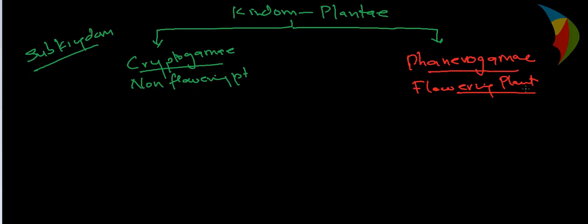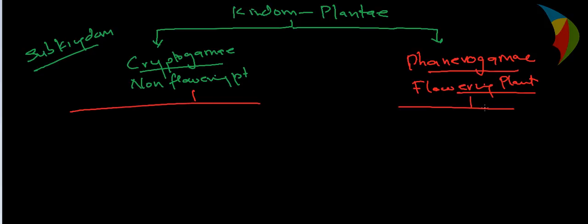So we have divided the kingdom Plantae into two sub-kingdoms: Cryptogamy and Phanerogamy — one is non-flower-bearing and one is flowering plants. Now we can divide these further into divisions.